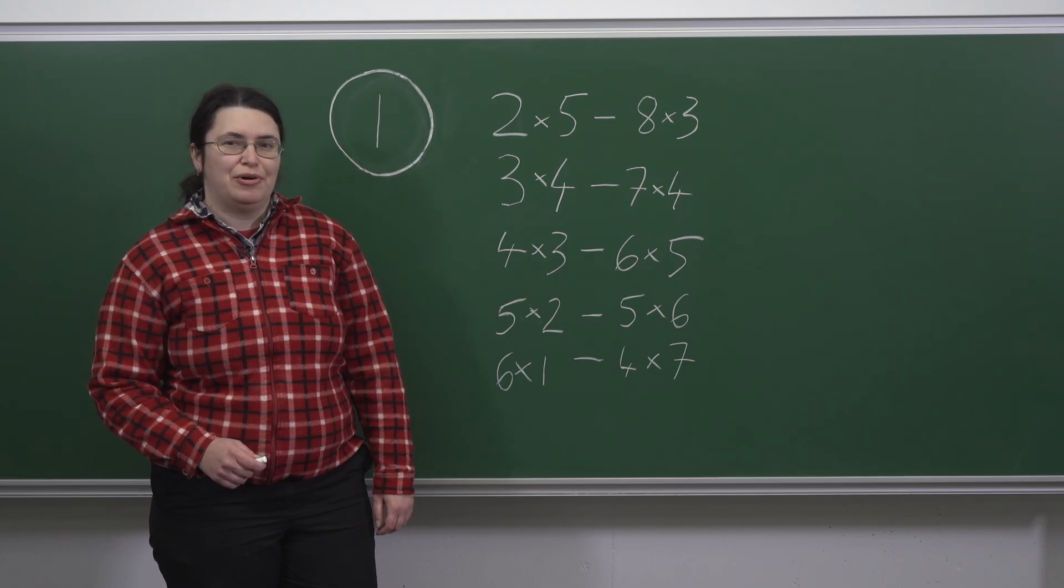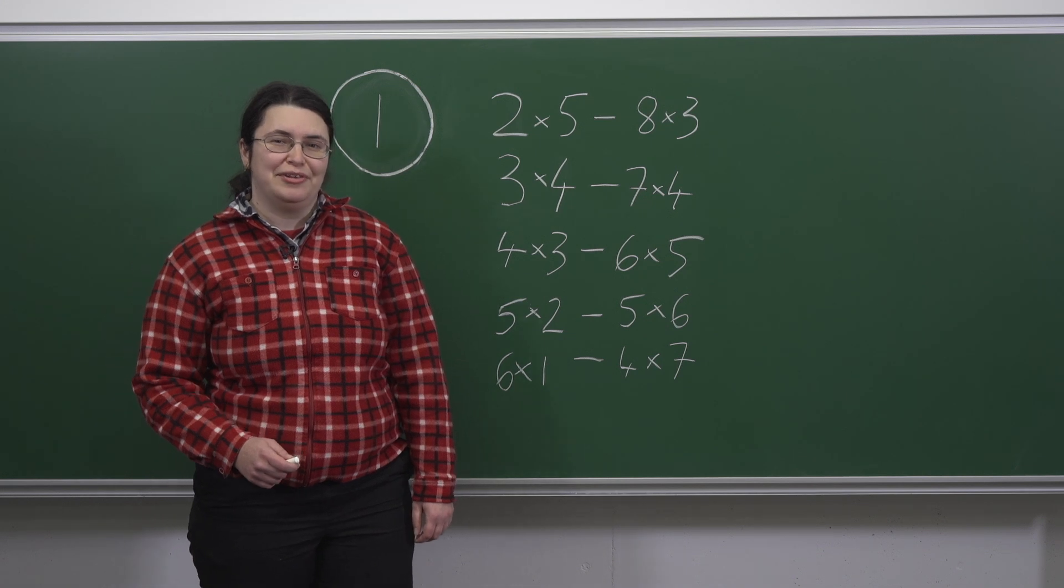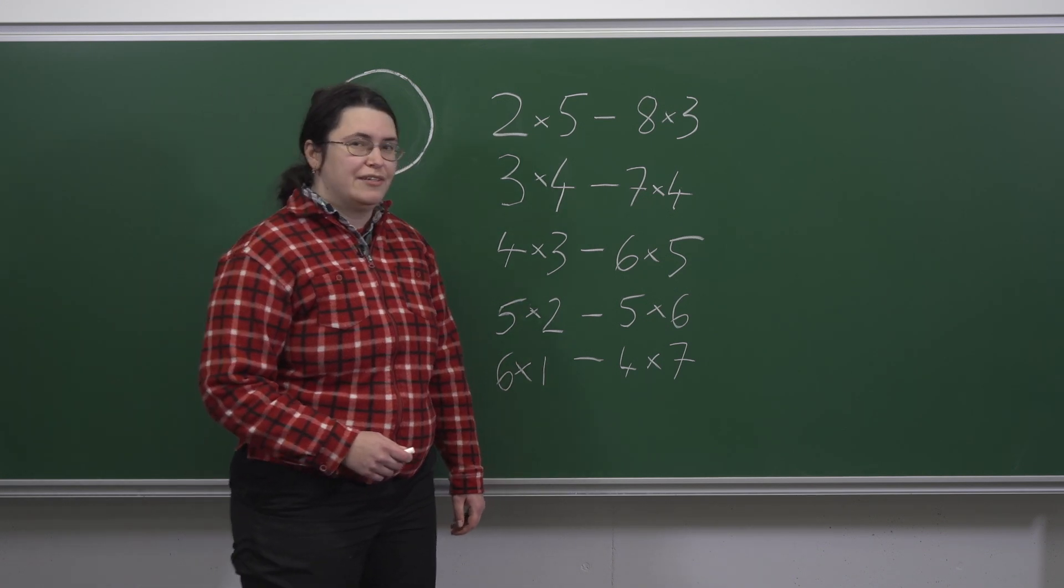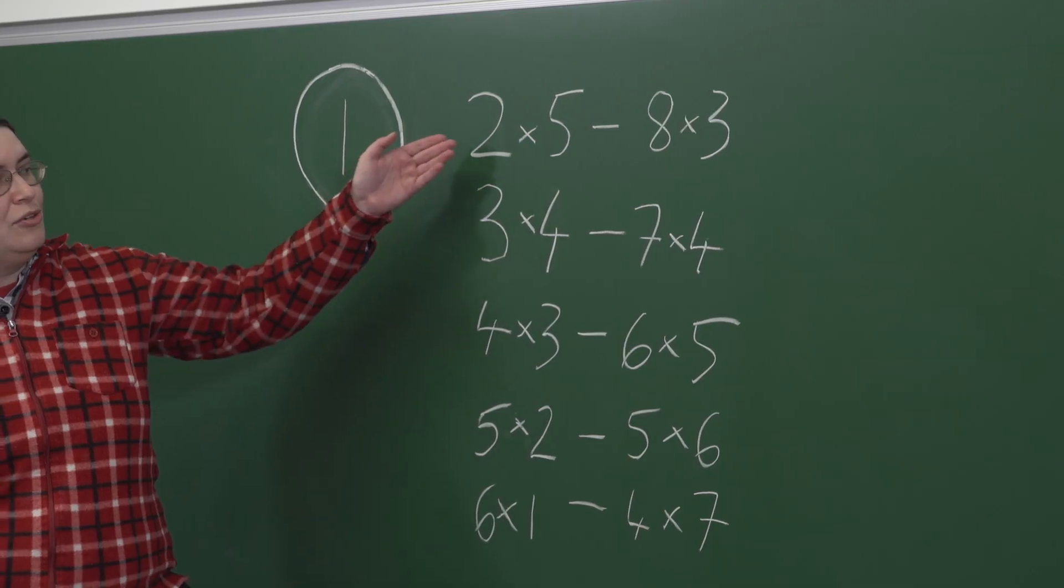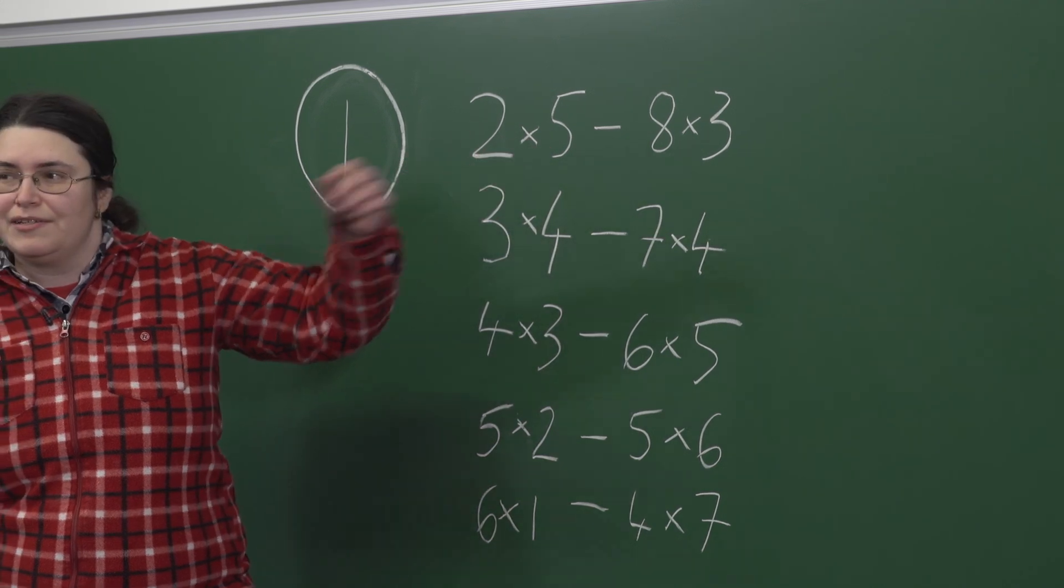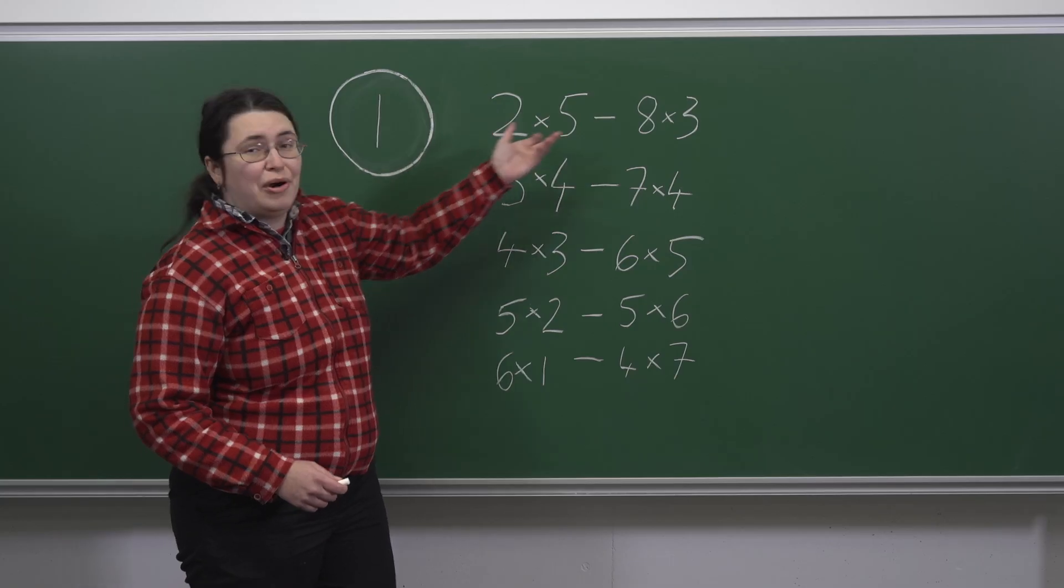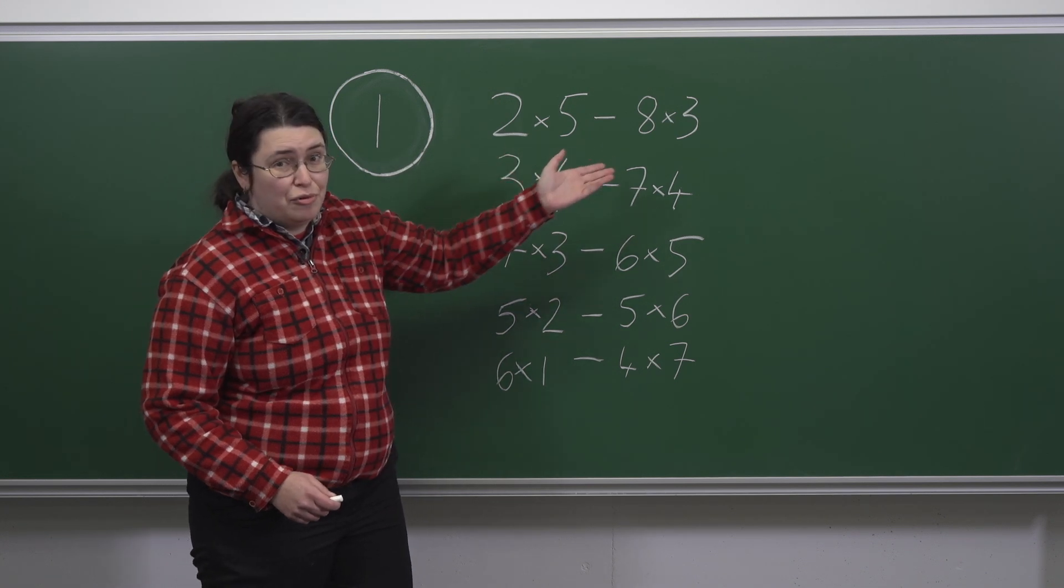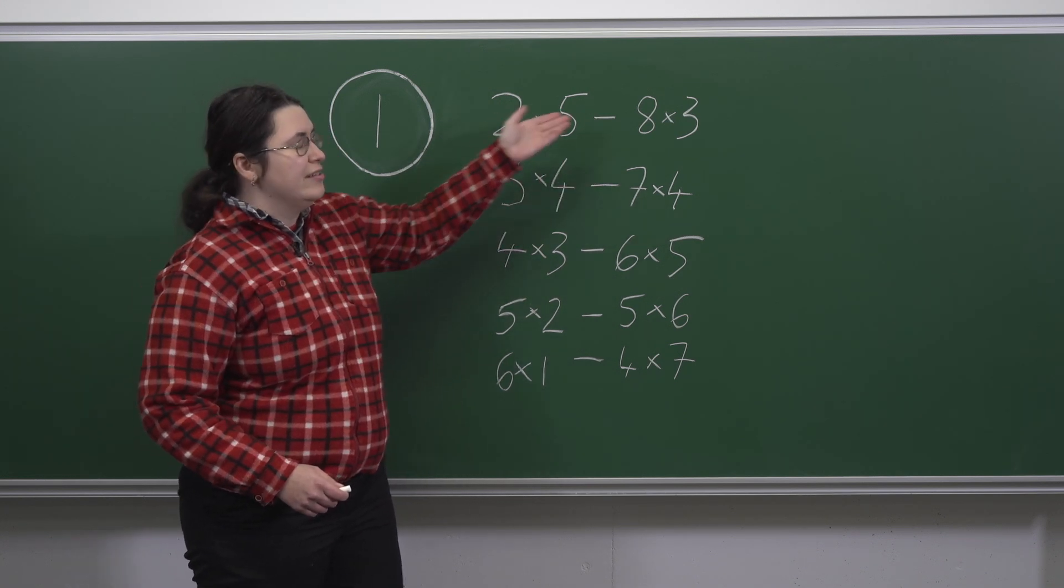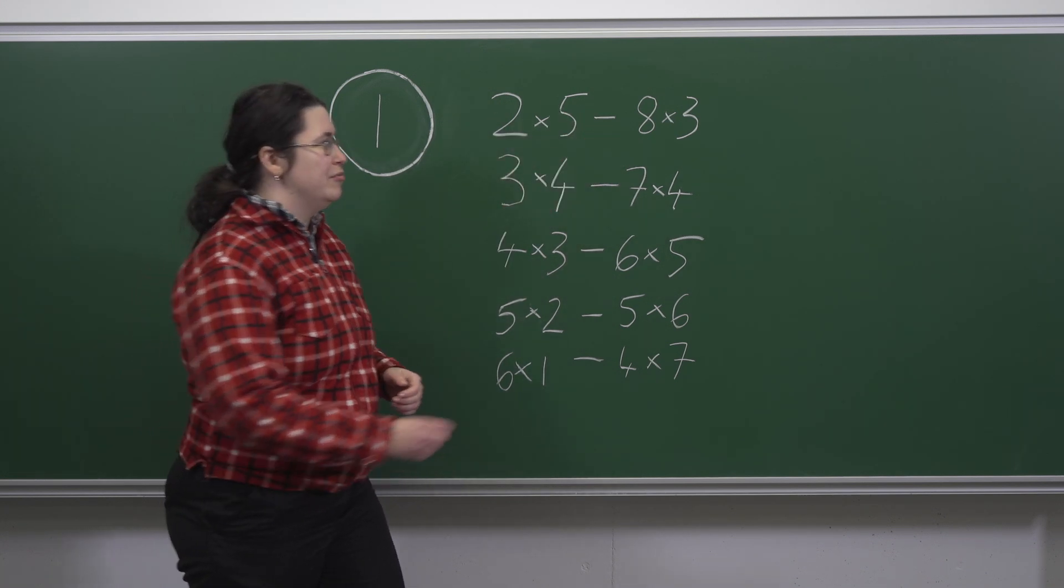The simplest way of approaching this problem is simply to work through the arithmetic and evaluate all these expressions. 2 times 5 is 10, minus 8 times 3, which is 24. Remembering of course our priority, we need to do the multiplication before the subtraction, so that is 10 minus 24, which is minus 14.